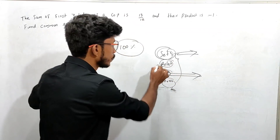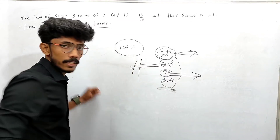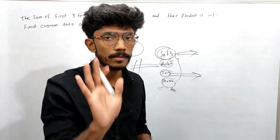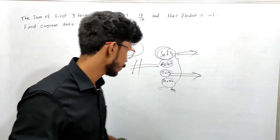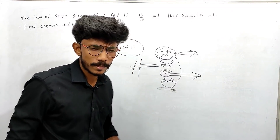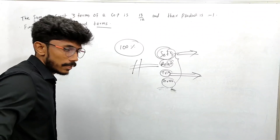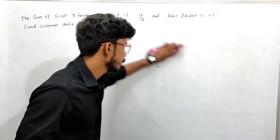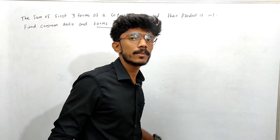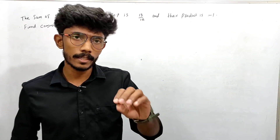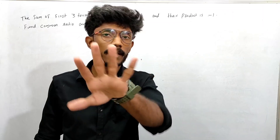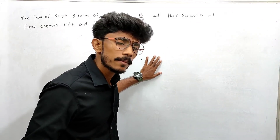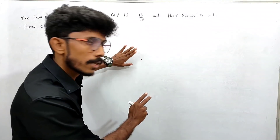Topics include: relation function, the graph, modulus function, signum function, etc. Also arrangement in permutation. Let's take a look — I'm going to study the same things, and you will learn the same things I have to study.